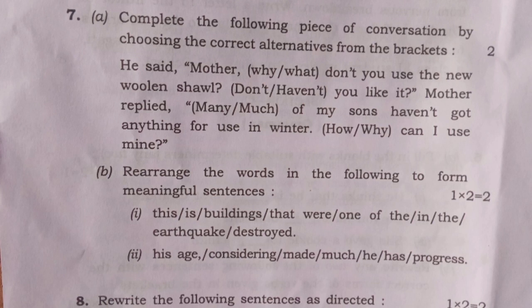He said, 'Mother, why don't you use the new woolen song?' Correct answer: 'Why don't you use the old woolen song?' Next one — 'don't or haven't' — correct answer: 'don't'. 'Don't you like it?' Next one — 'many or mass' — correct answer: 'many'. 'Many of my sons haven't got anything for use in winter.' Our last sentence — 'how or why can I use mine?' Correct answer: 'How can I use mine?'